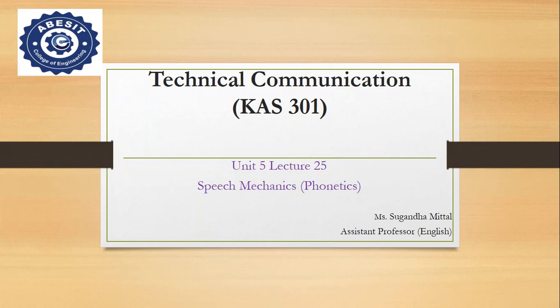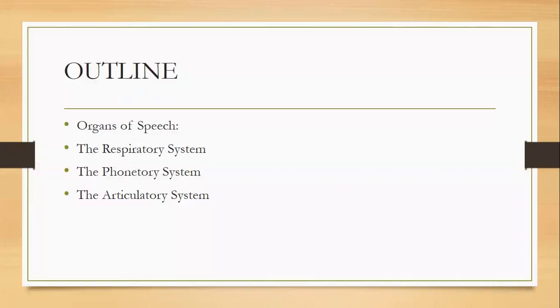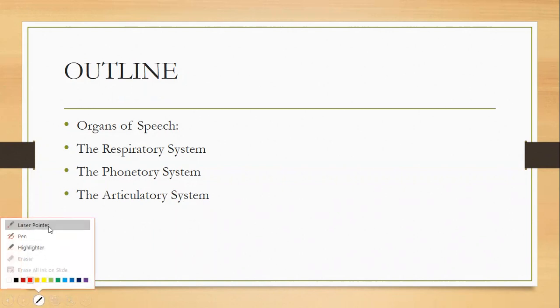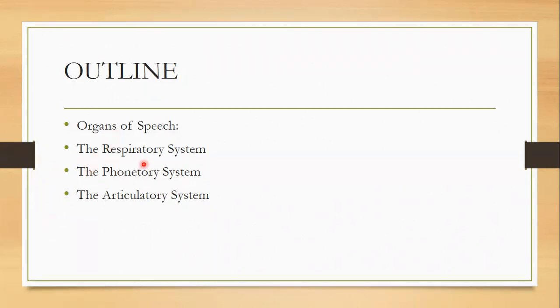But have you ever thought from where these words come out of our mouth? Where do these sounds come from in our body, and how are they produced? Today we are going to study what the different organs of speech are that are involved in speaking, and the different systems that help in producing these sounds from our mouth or nose — namely the respiratory, phonatory, and articulatory systems.